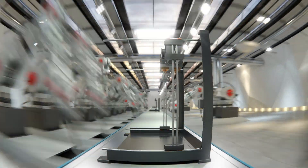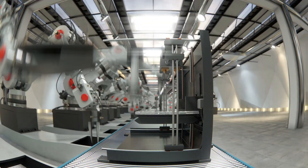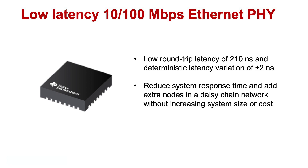With round-trip latency of 210 ns and deterministic latency variation of plus or minus 2 ns, the DP83826E enables you to reduce system response time and add extra nodes in a daisy chain network without increasing system size or cost.